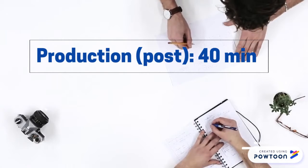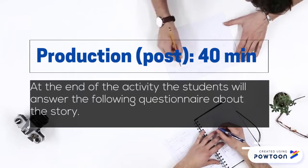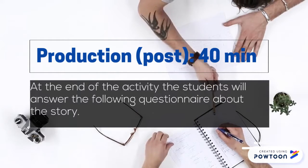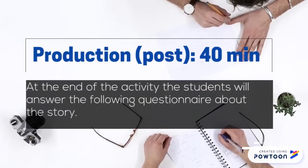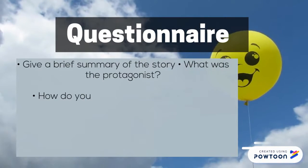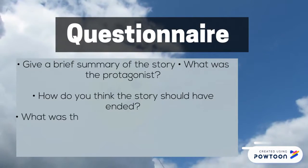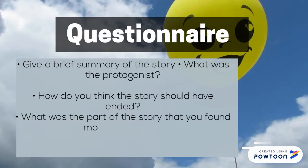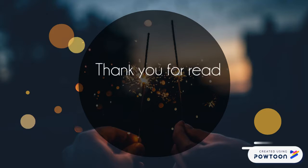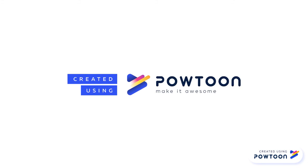Production — Post, 40 minutes. At the end of the activity, students will answer the following questionnaire about the story: Give a brief summary of the story. Who was the protagonist? How do you think the story should have ended? What was the part of the story you found most interesting? What opinions do you have of the protagonist? What do you think the story should have reflected?